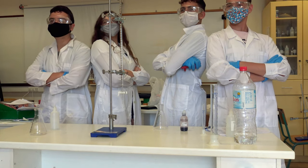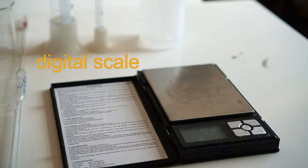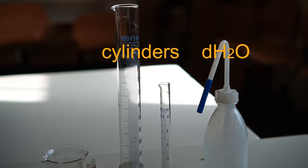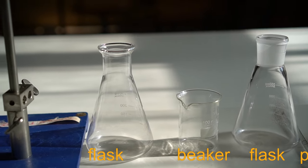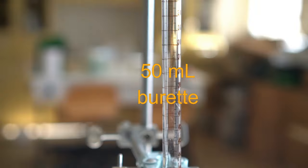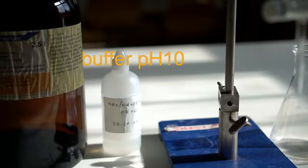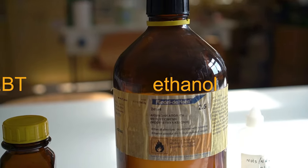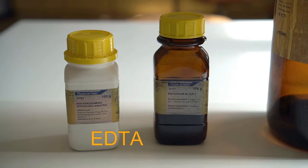To perform this method we need four specially trained high school students and the following: a digital scale, deionized water, graduated cylinders, a volumetric pipette, a beaker, conical flasks, a 50 ml burette, a buffer of pH 10, ethanol, eriochrome black T (EBT), and freshly prepared EDTA solutions.